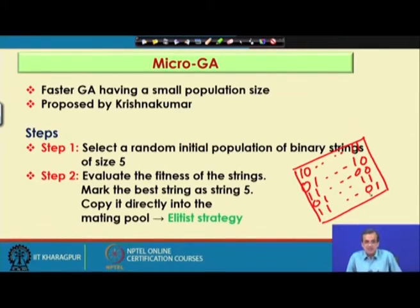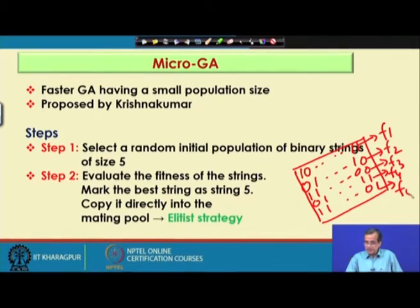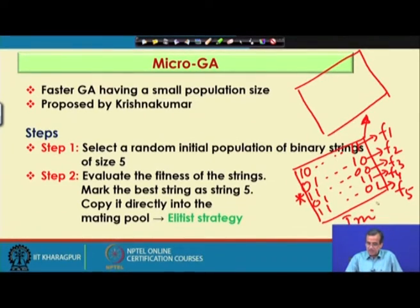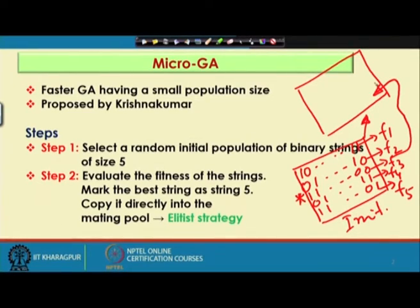Supposing I am solving a maximization problem, we find out which of the 5 fitness values is the maximum and mark that string. That particular GA string will be directly copied to the mating pool. Say this is the mating pool: the third string 1100, because it has the highest fitness, is directly copied as string 5. This principle is known as the elitist principle — the already-found best solution gets a direct copy in the mating pool.